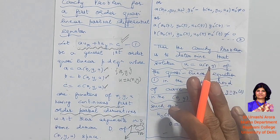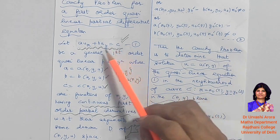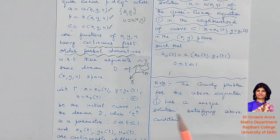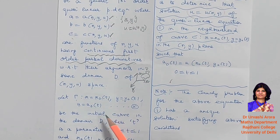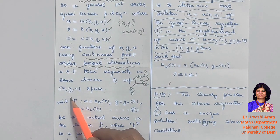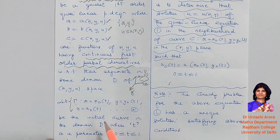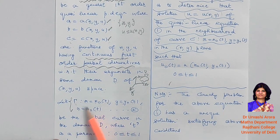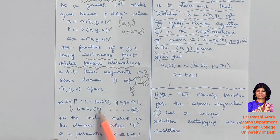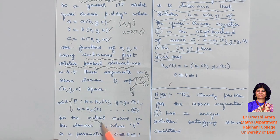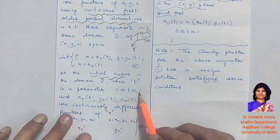Given this background, we are interested in finding the Cauchy problem for this first-order quasi-linear PDE. When talking about the Cauchy problem, the first thing you need is an initial curve. There is a prescribed initial curve denoted by gamma, given in parametric form: x = x₀(t), y = y₀(t), u = u₀(t). This curve lies in domain d, and the parameter t lies between 0 and 1.